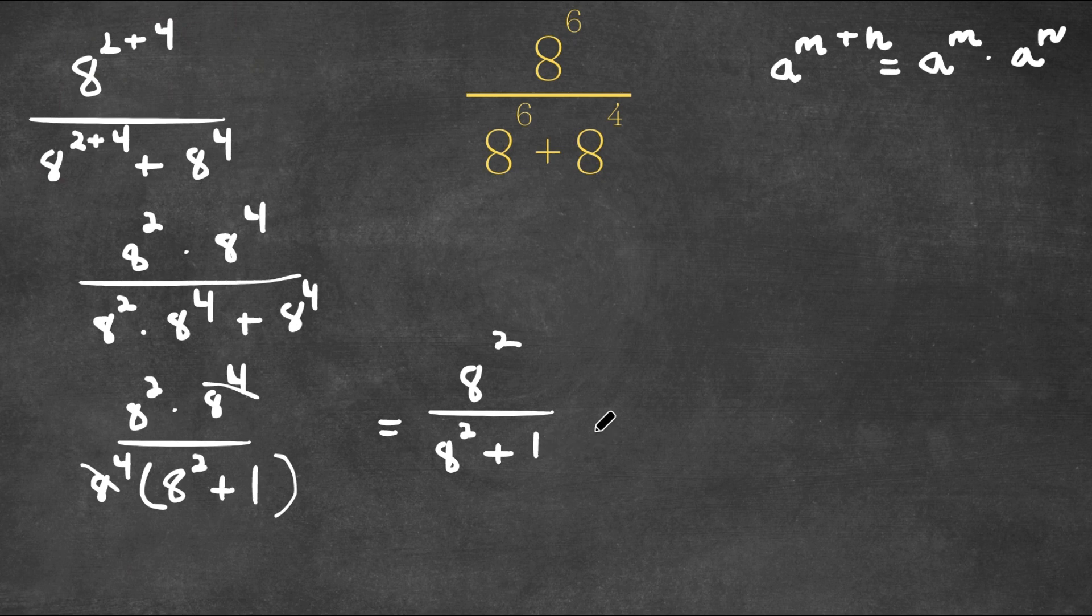8 squared is 64 and 8 squared again is 64. 64 plus 1 is 65. So 64 over 65 would be our answer.